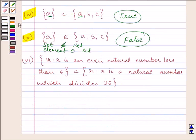Proceeding on with the last and final part. Now here we are given two sets. First of all, {x : x is an even natural number less than 6}. So can we think of even natural numbers less than 6? Let us write it down in roster form.